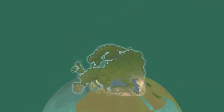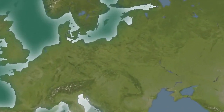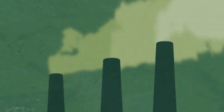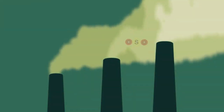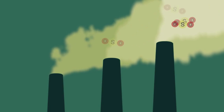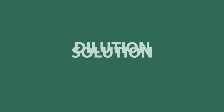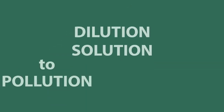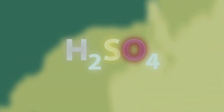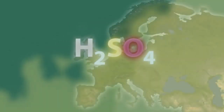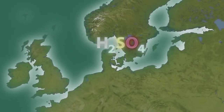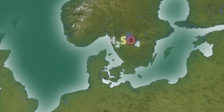Let's look at power stations in Europe. For many years these stations have been using tall chimneys to disperse the sulfur dioxide far away, thinking that dilution was the solution to pollution. However, the acid did not get diluted, but instead was carried in the wind to Scandinavia where it fell into Swedish lakes.